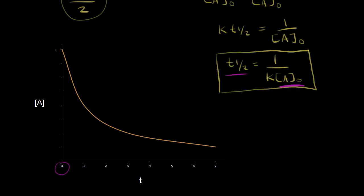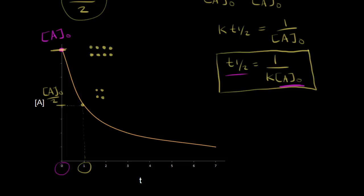Let's look at a graph of concentration versus time for a second order reaction. When time is equal to zero, this point on the graph is the initial concentration of A. Let's say we're starting with eight molecules. If we wait for the concentration to decrease to half its initial, we're left with four molecules. We can find on the graph that half the initial concentration corresponds to dropping down to the x-axis at one second. So our first half-life is one second.